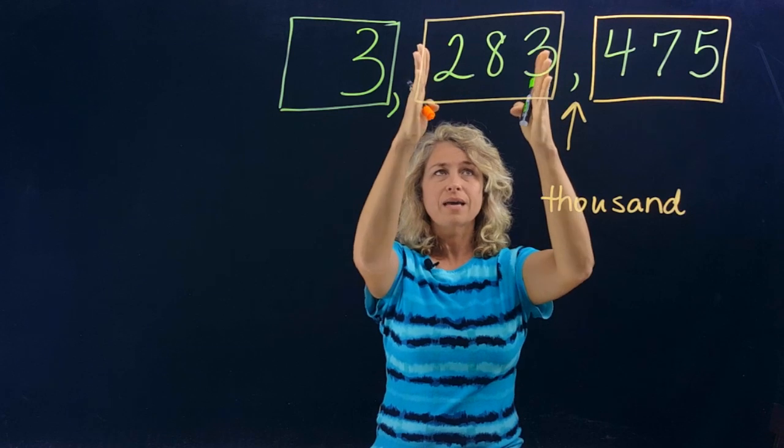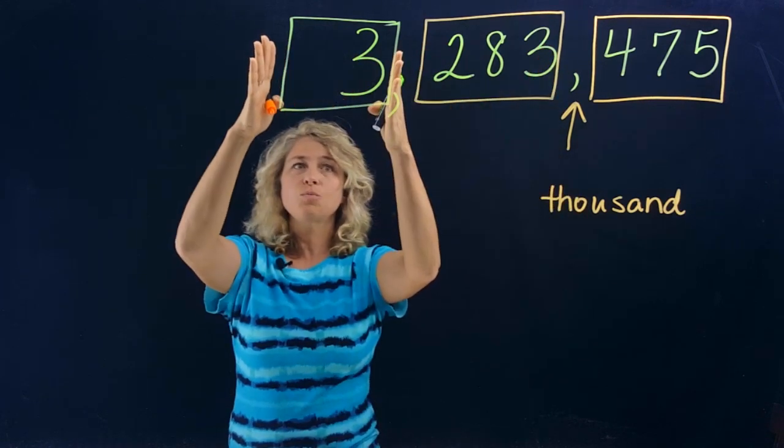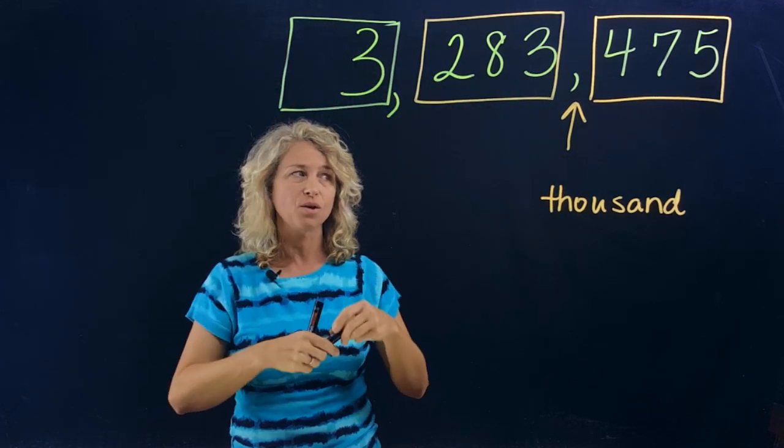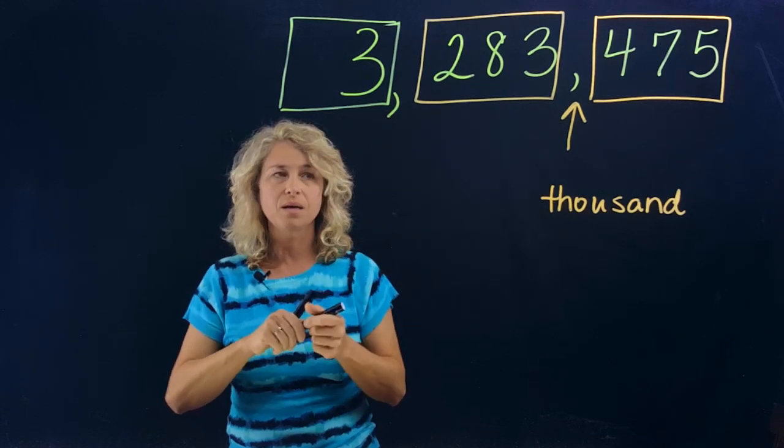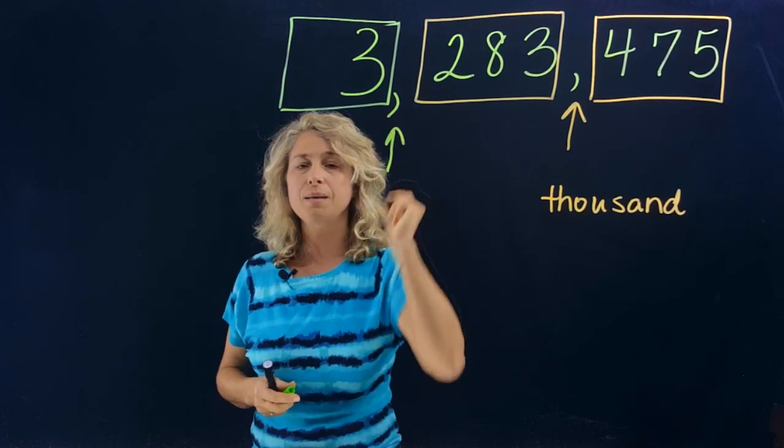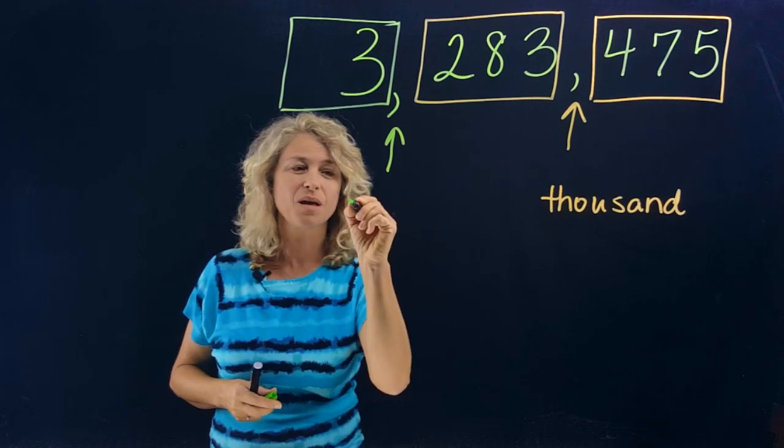This is the ones period, the thousands period, and this will be the millions period. I bet you already know what this comma right here is going to represent. Yes, million.